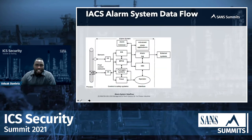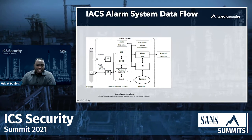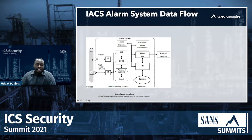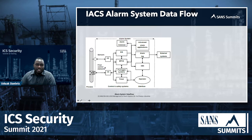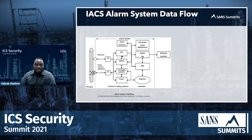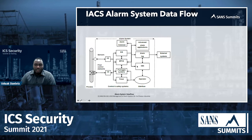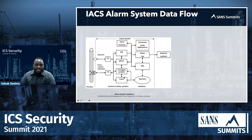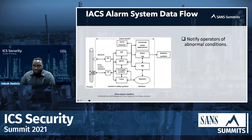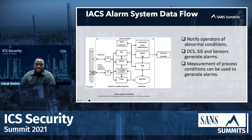Looking at the ICS alarm system data flow from the ISA 18.2 standard: the model shows how an alarm flows from the process layer through sensors into DCS systems, process automation systems, and PLCs. Historians capture these alarms, you have alarm logs, and HMIs allow operators to see what's going on. In some cases package systems have panels that display alarms without going to an operator HMI workstation. DCS and SIS sensors generate alarms, and measurement of process conditions can be used to generate alarms.